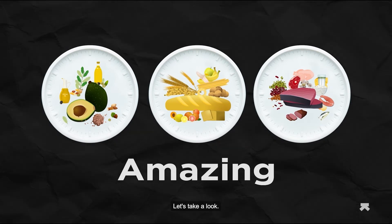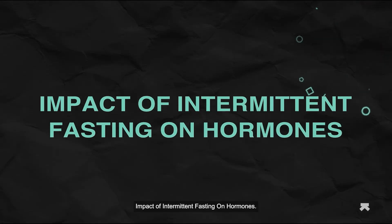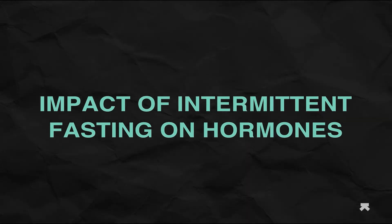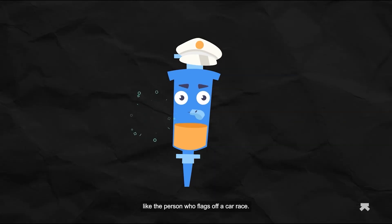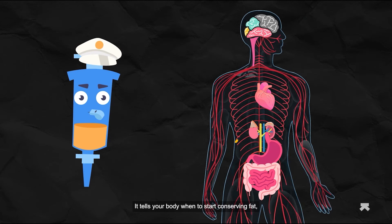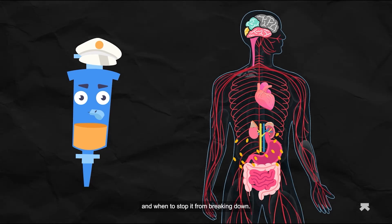So far, this diet sounds pretty straightforward. But when you're fasting, what's really going on inside your body? Let's take a look. Impact of intermittent fasting on hormones: Insulin. Insulin is like the person who flags off a car race - it tells your body when to start conserving fat and when to stop it